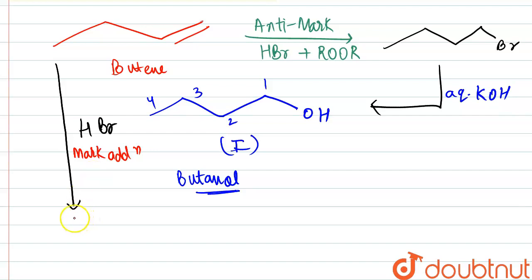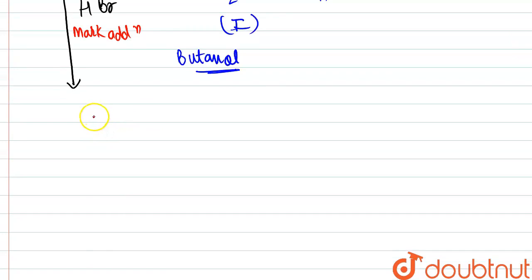So what exactly is the product that we would be getting? Here, Br is going to be attached. And now again we would be treating it with aqueous potassium hydroxide where at second position we will be getting - let's draw the structure carefully. This is one, two, three, four carbons.